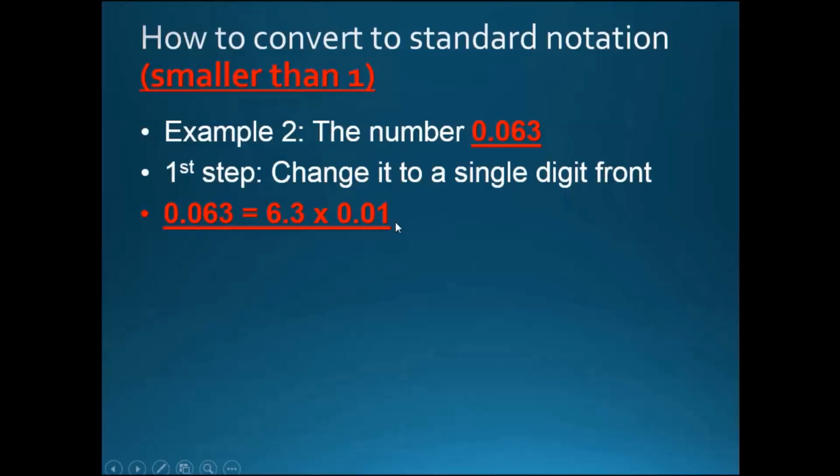This can be easily checked by your calculator once again. Now the second step is to count the number of zeros again. So 0.01 has two zeros. You should count both of them. You should count all zeros including the one before the decimal.